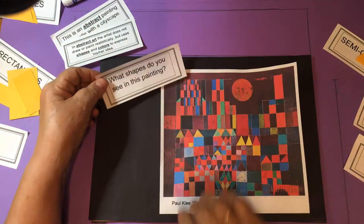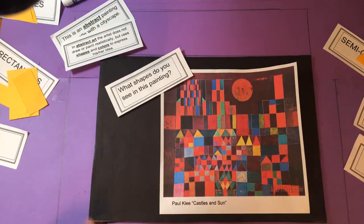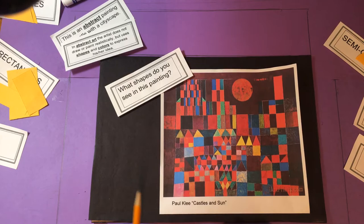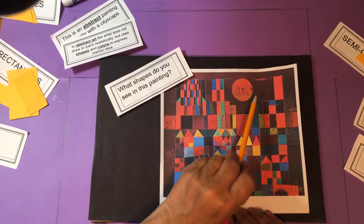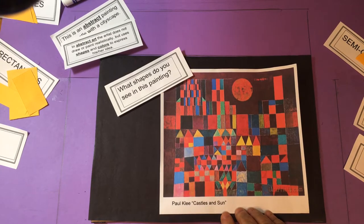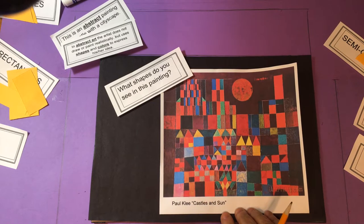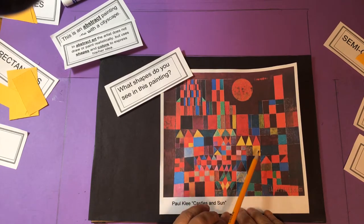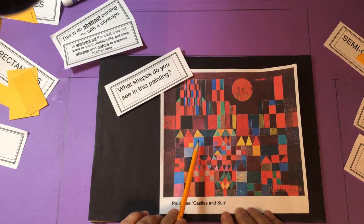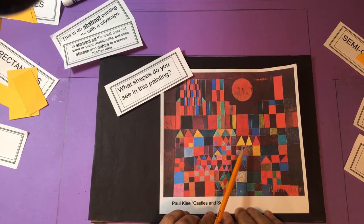What shapes do you see in this painting? Look carefully. Well, I think we all right away see the big circle. That's the Sun. And then if you look around here where the castle is, we can see triangles of different sizes. We can see squares of different sizes.